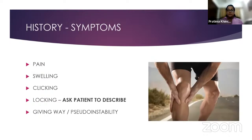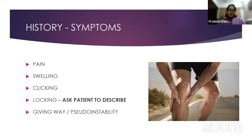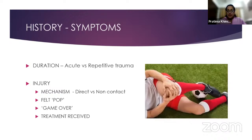Coming to the history: pain is a very important factor — determine whether the pain is actually coming from the knee or referred from elsewhere, and when the pain occurs. Swelling, clicking, and locking are mechanical symptoms often described by patients. When it comes to locking, we usually ask patients to describe what they mean, because often they assume not being able to bend the knee is locking — however, true locking is the exact opposite, when they're not able to extend the knee from a flexed position. The same goes for giving way: occasional giving way in straight-line activities can be due to quadriceps inhibition, to differentiate this pseudo-instability from true instability on rotatory or twisting movements.